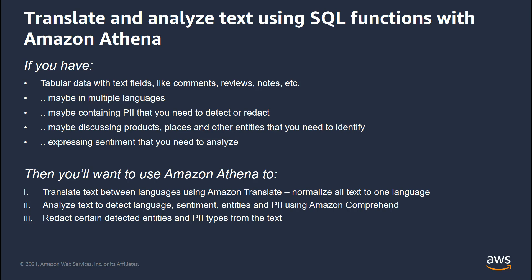You can translate text between languages just using a SQL query within Athena. Athena is going to call the Amazon Translate service behind the scenes. You can use this to normalize text in multiple languages into one language. It also allows you to use Amazon Comprehend behind the scenes, all from a SQL query in Athena, to detect which language a particular piece of text was written in. You can detect the dominant sentiment of that text, and you can identify entities or personally identifiable information.